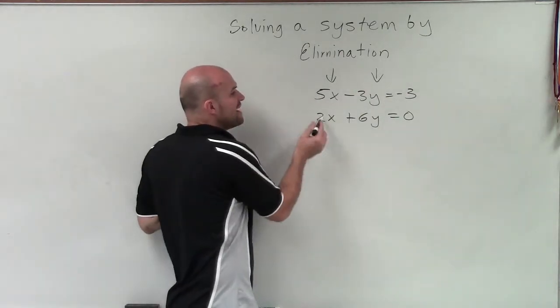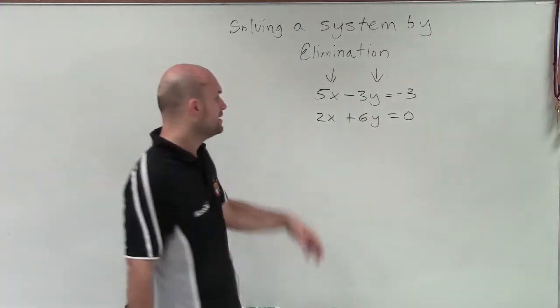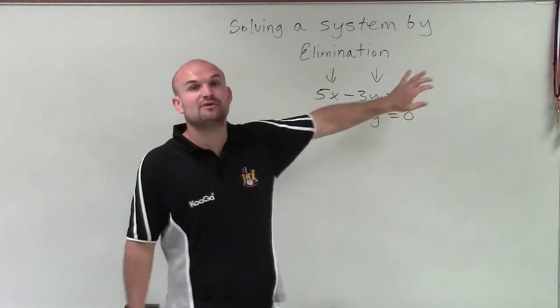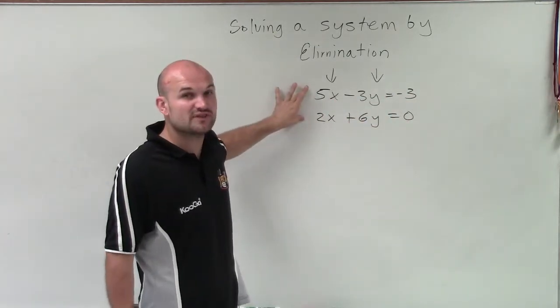Well, I noticed that 5 and 2, those have a least common multiplier of, or a least common multiple, of 10. What that means, I'd have to multiply this top equation by 2 and the bottom equation by 5 to get my coefficients to both be 10.